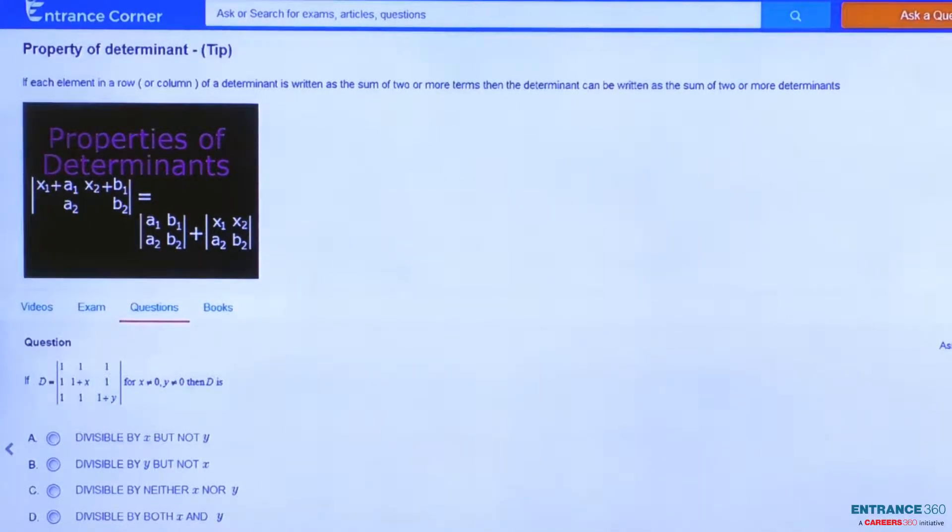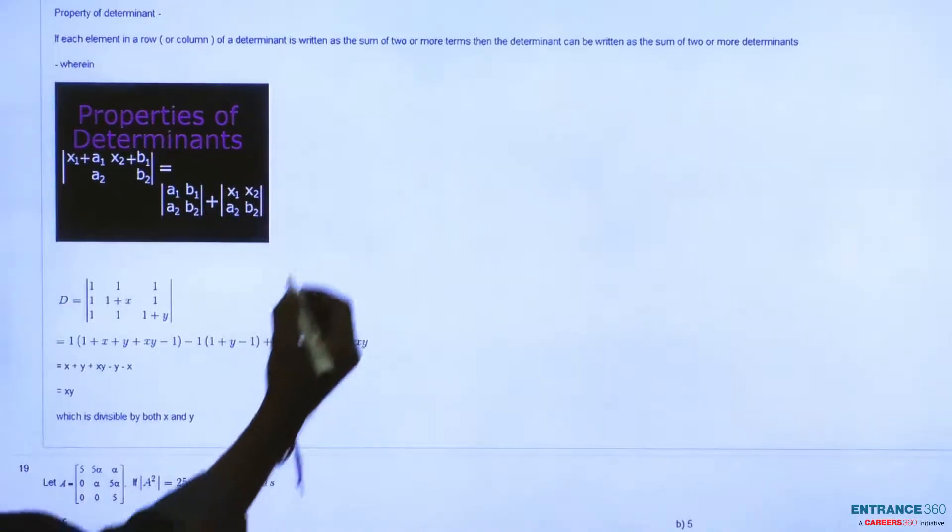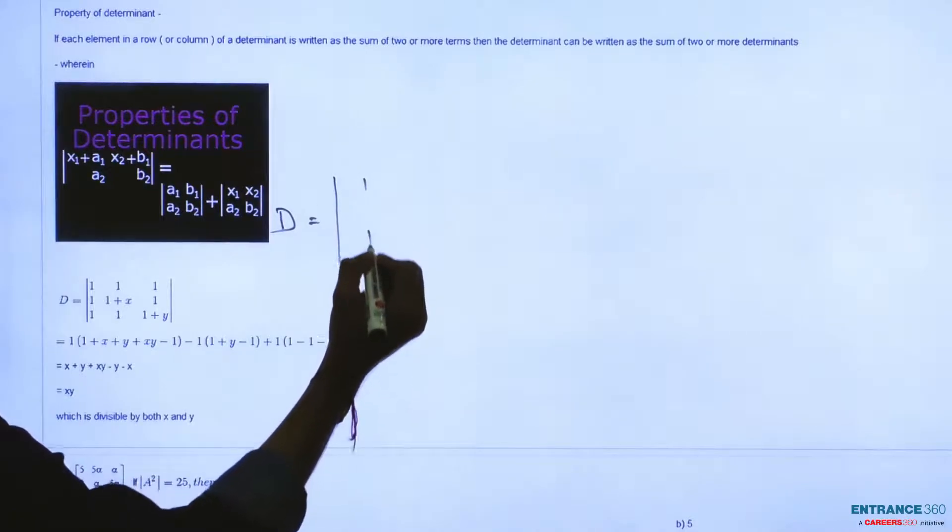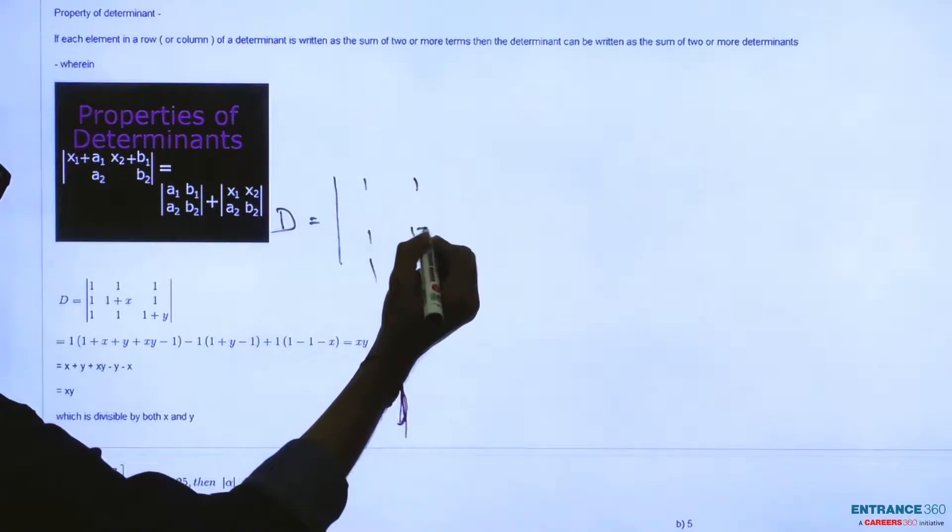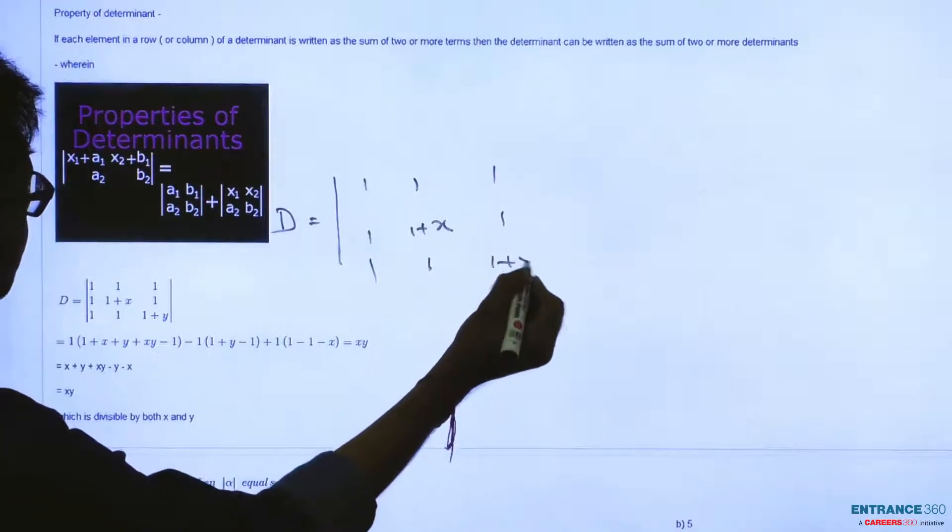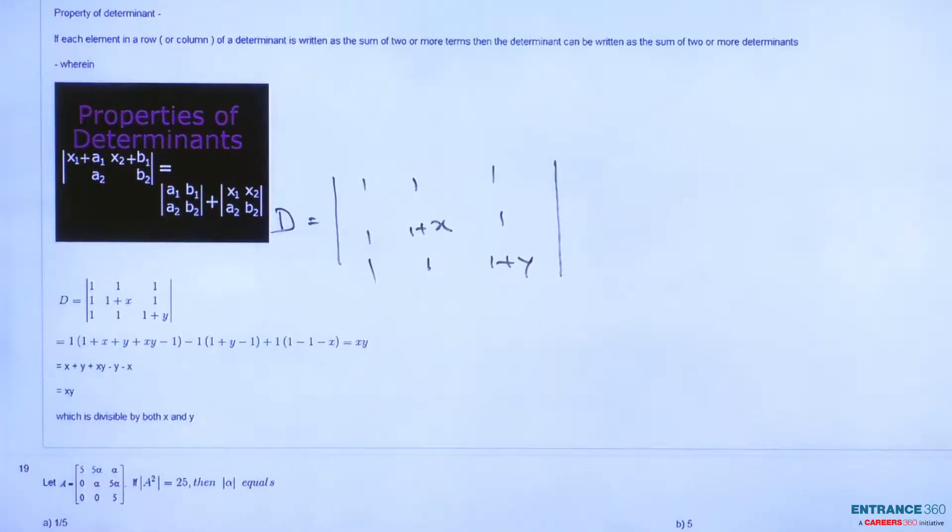Let's solve this question. We have given determinant D which is a 3x3 matrix: row 1 is [1, 1, 1], row 2 is [1, 1+X, 1], row 3 is [1, 1, 1+Y]. First, we need to find the determinant value of this matrix.